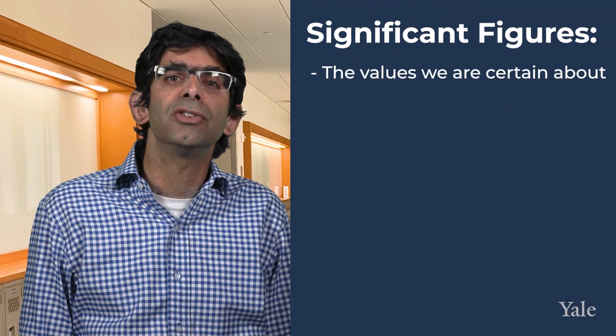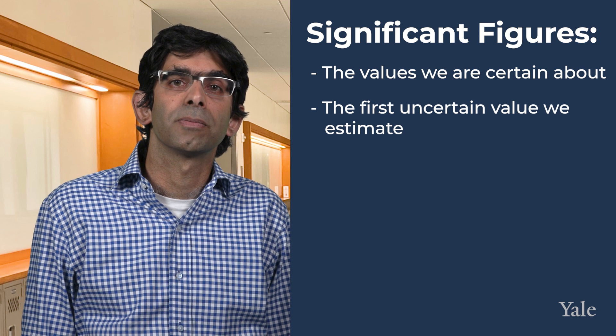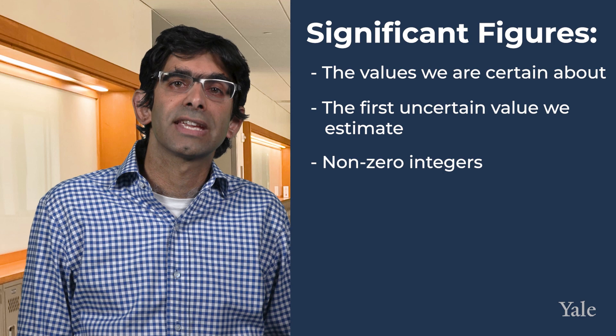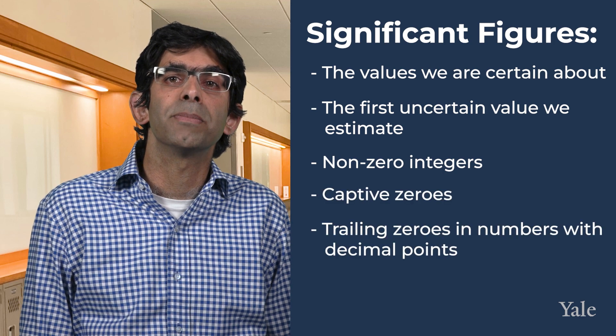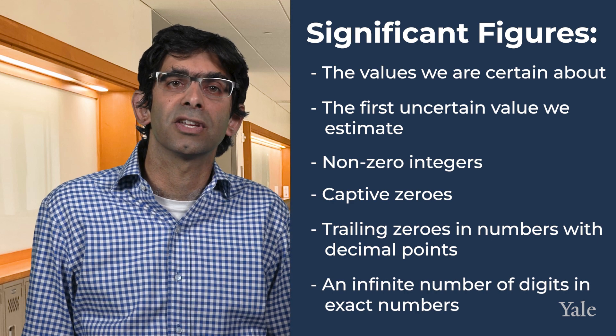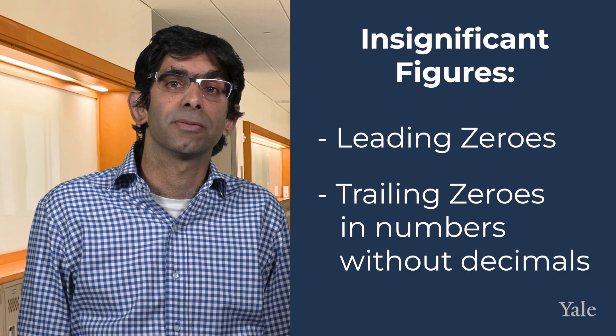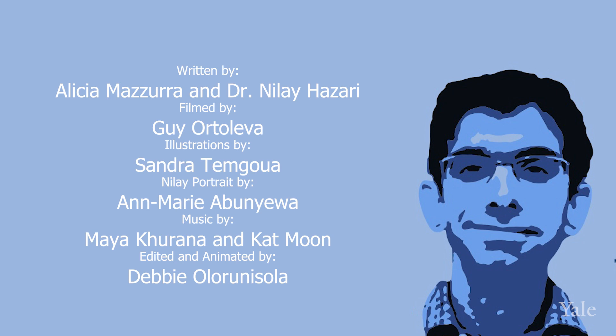To summarize, significant figures are the values that we are certain about and the first uncertain value that we estimate. All non-zero integers, captive zeros, trailing zeros in numbers with decimal points, and an infinite number of digits in exact numbers are significant. Leading zeros and trailing zeros in numbers without decimal points are never significant. While it takes some time to learn all of the rules, I hope this video can be of some significance to you. Neely's chemistry videos.